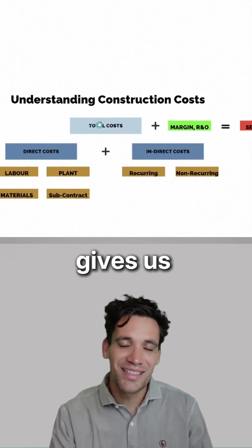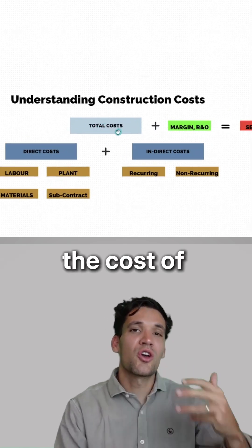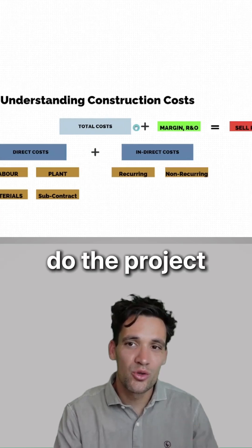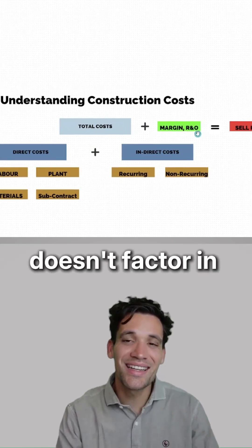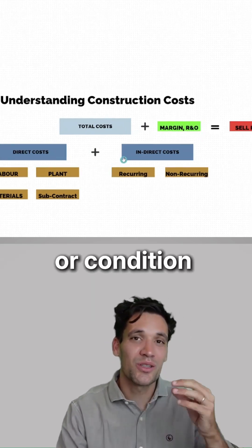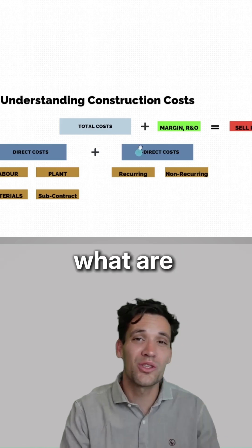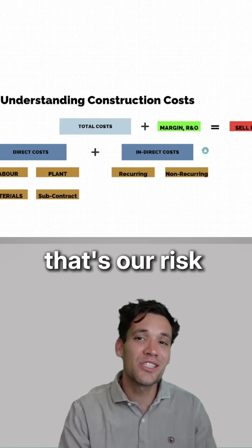Direct plus indirect gives us our total project cost, the cost of all the resources we need to do the project. What this doesn't factor in is any uncertain events or conditions. How much is it going to rain? What are the ground conditions going to be like? That's our risk and opportunity.